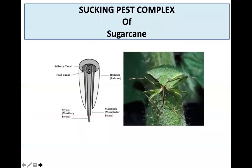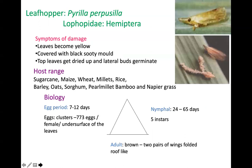Sucking pests are based on the mouth parts. As a best example, you can understand through this pentatomid bug. Sucking insects have two canals — one is the salivary canal and one is the food canal. The stylet is made up of one pair of maxillary stylets on the inner side and a mandibular stylet on the outer side. Together they form the rostrum, also called a beak.